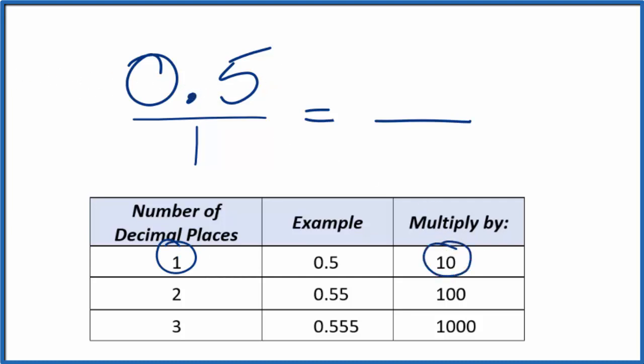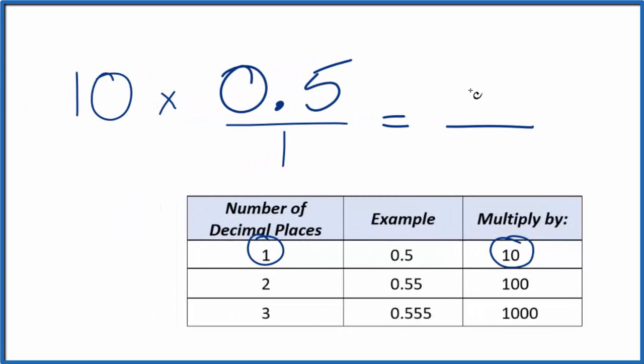So we can multiply 0.5 times 10, and 0.5 times 10, that's just 5. So now we have a whole number.